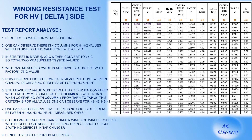Everything is within plus or minus 5 percent. One can also observe that there is no gross difference between H1-to-H2, H2-to-H3, and H3-to-H1. This ensures transformer windings are wired properly with proper tightness, there is no open or short circuit, and no defects in the tap changer. Hence this test report is acceptable.